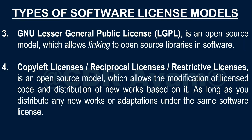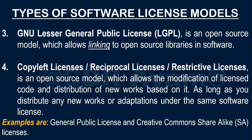The fourth open source license model is the Copyleft license, which is also known as the Reciprocal license or the Restrictive license. The most well-known examples of a Copyleft or Reciprocal license are the General Public License (GPL) and the Creative Commons share-alike licenses. These licenses allow you to modify the licensed code and distribute new works based on it, as long as you distribute any new works or adaptations under the same software license.